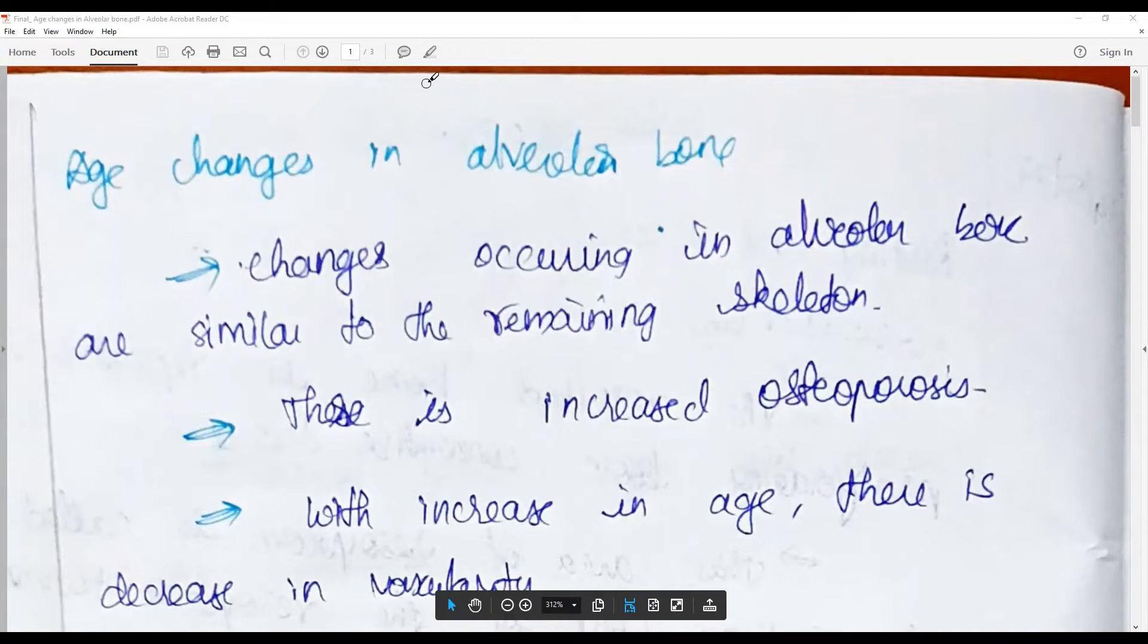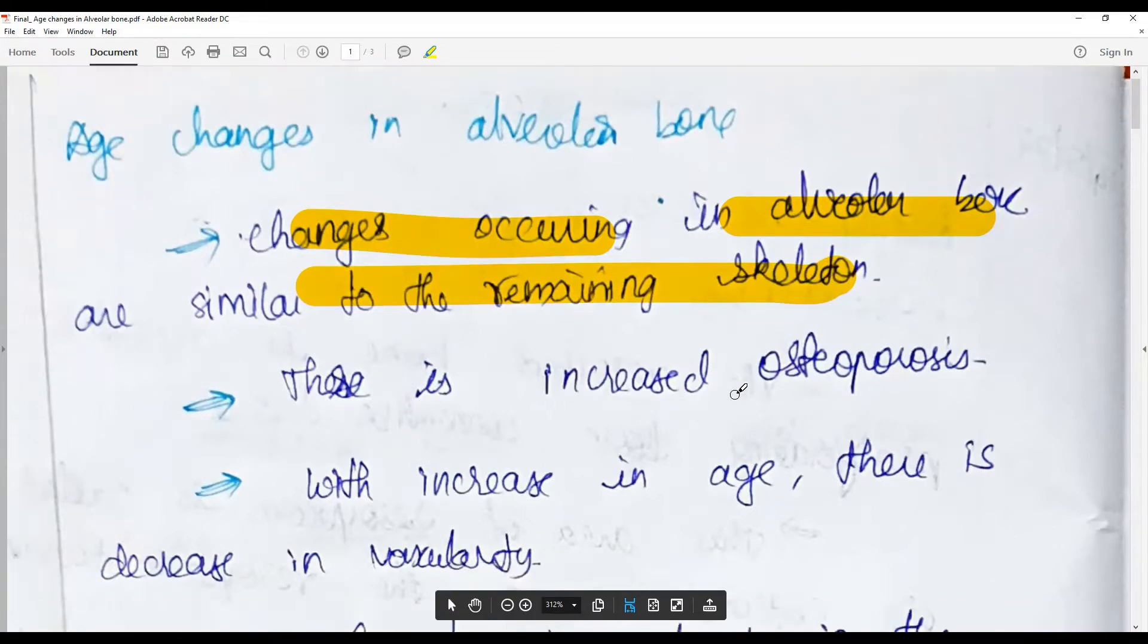Changes in alveolar bone are not specific to alveolar bone but very similar to that of the other skeleton. Because of its position in the oral cavity, there are some subtle changes based on the functions.